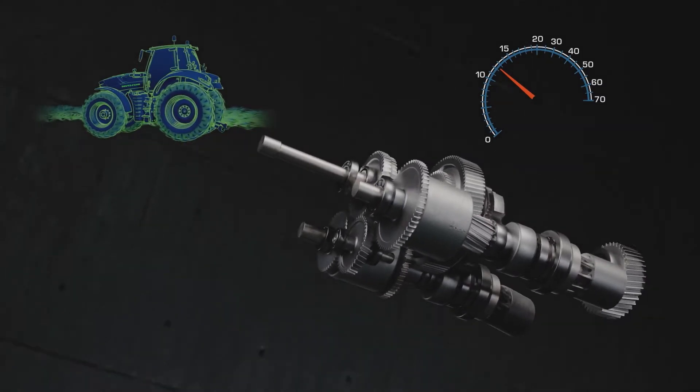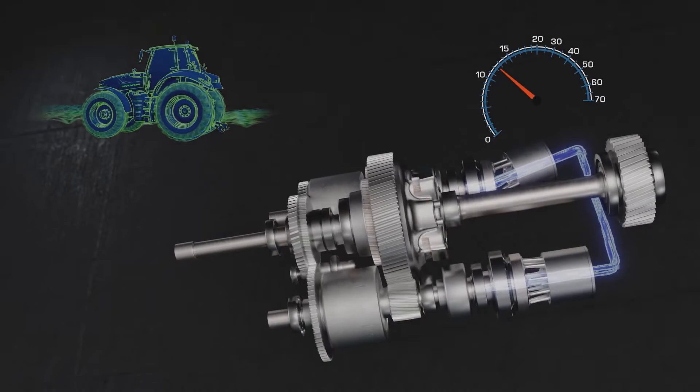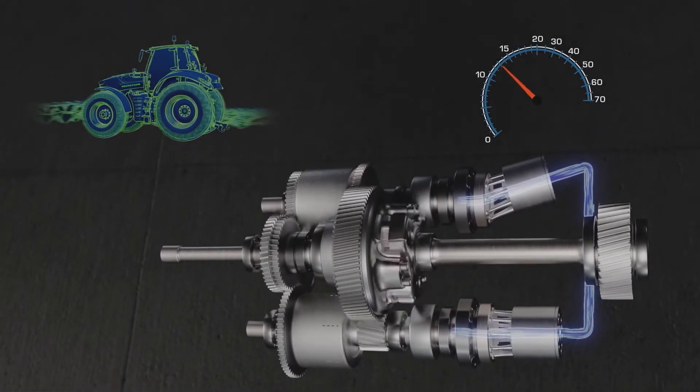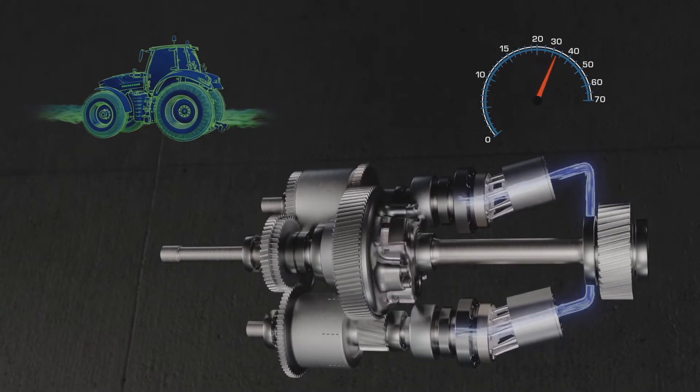In the second range, the entire power flow in the transmission changes. The tasks of the hydraulic units are exchanged. The hydraulic motor now works as a hydraulic pump, and the hydraulic pump now works as a hydraulic motor.